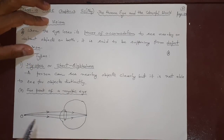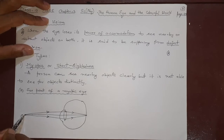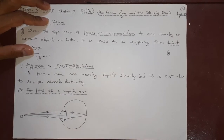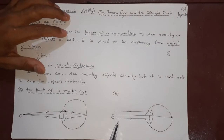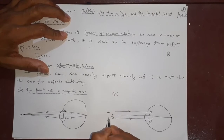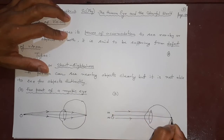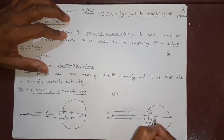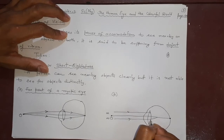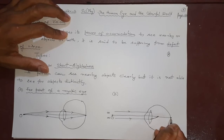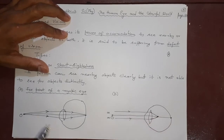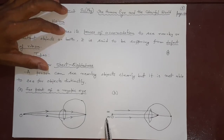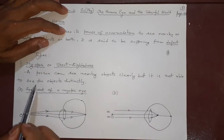A myopic eye cannot make this adjustment with light coming from infinity. It is only possible with some far point nearer than infinity. Now look at diagram B — when light is coming from infinity it comes parallel. A good eye will converge it at the retina because its focal length is exactly that length. But a myopic eye will converge it somewhere before the retina, so it will not be able to see properly. This is the defect of the myopic eye.